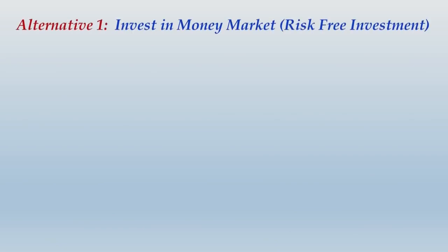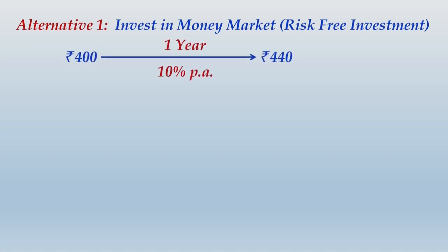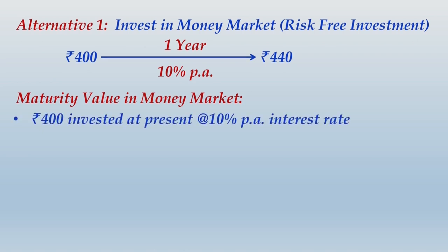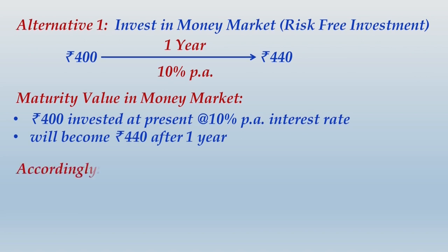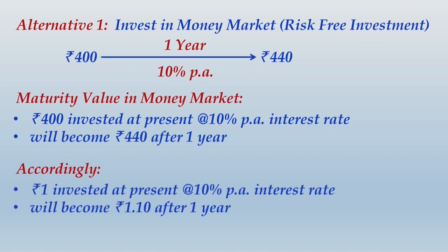The investor can invest in the money market where a risk-free return is earned. In the question, the spot price of the share is rupees 400. If the investor invests rupees 400 in the money market at 10 percent per annum, it becomes rupees 440 after one year. Accordingly, if we consider an investment of just rupee 1 in the money market, after one year it will become 1.1 at the same 10 percent per annum interest rate.